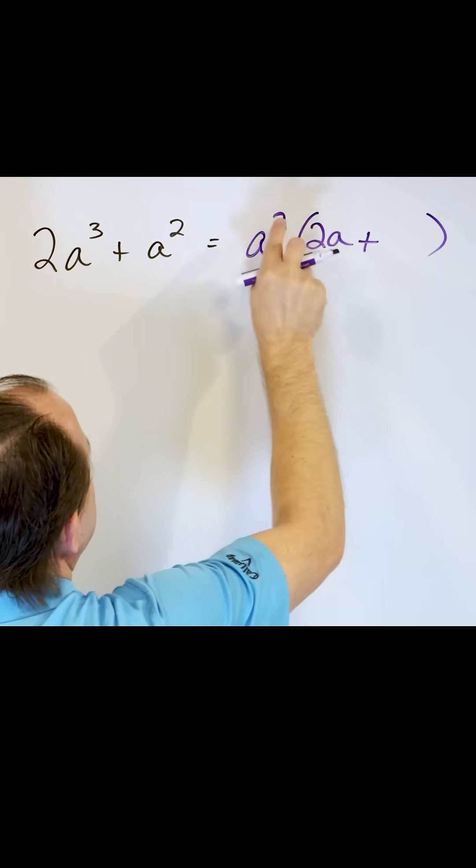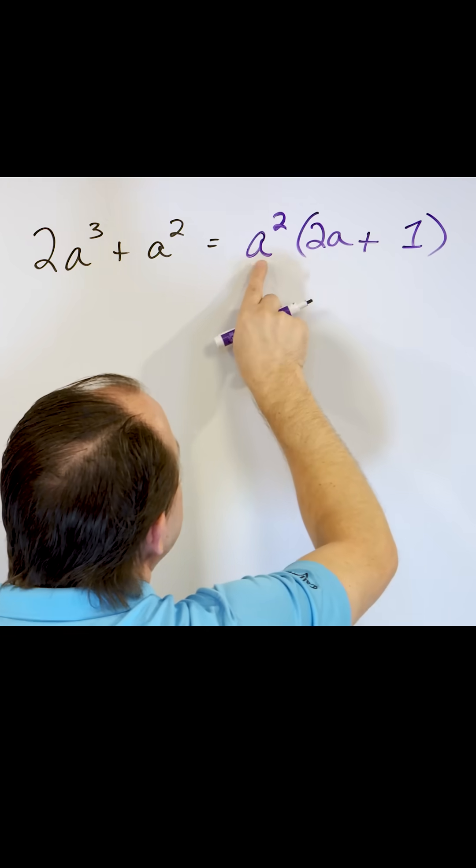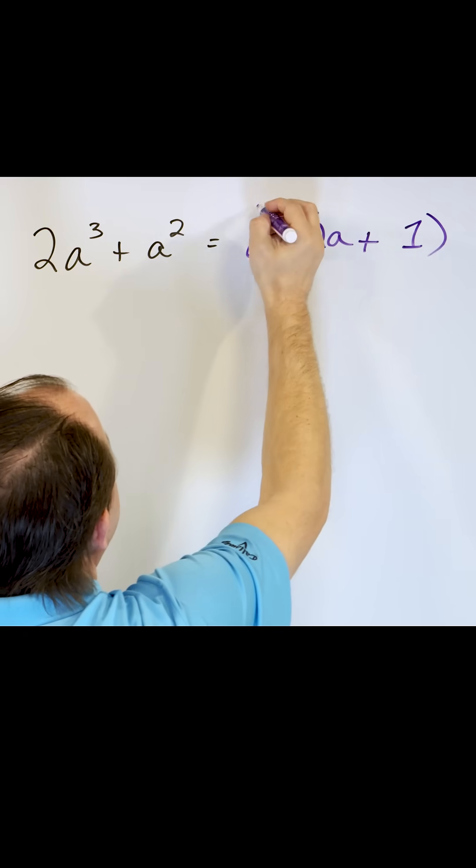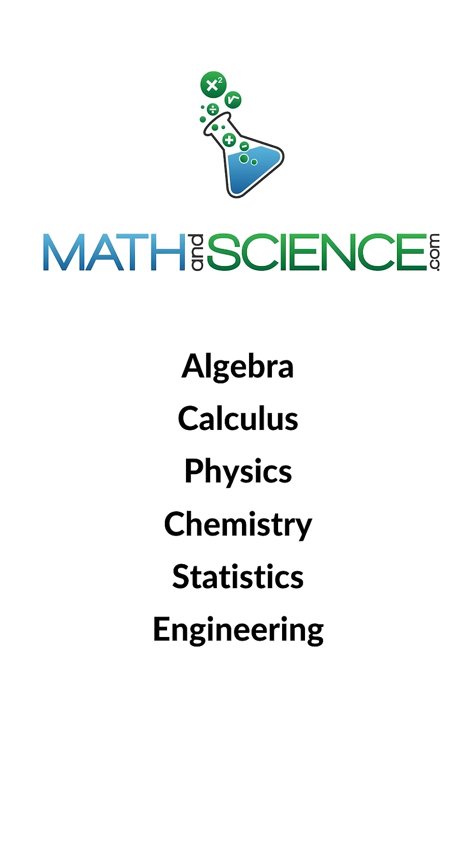Then we have a plus sign, and then a squared times something is a squared. There has to be a 1 here, so you multiply and you get 2a cubed. You multiply and you get a squared, so you know the answer's right. I don't even have to look at my notes. Learn anything at mathandscience.com.